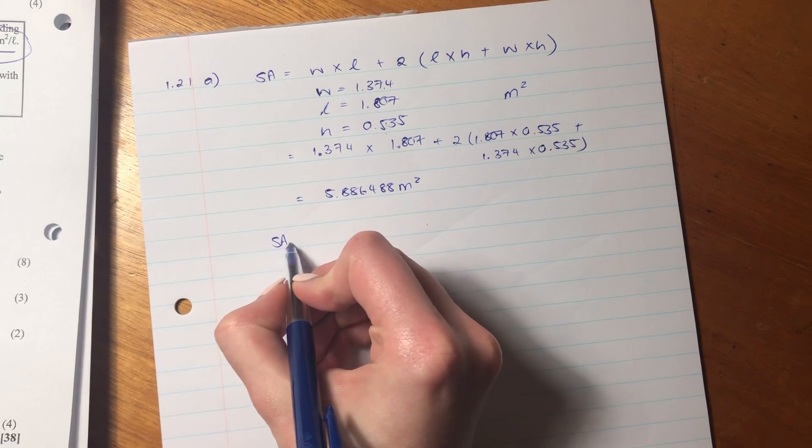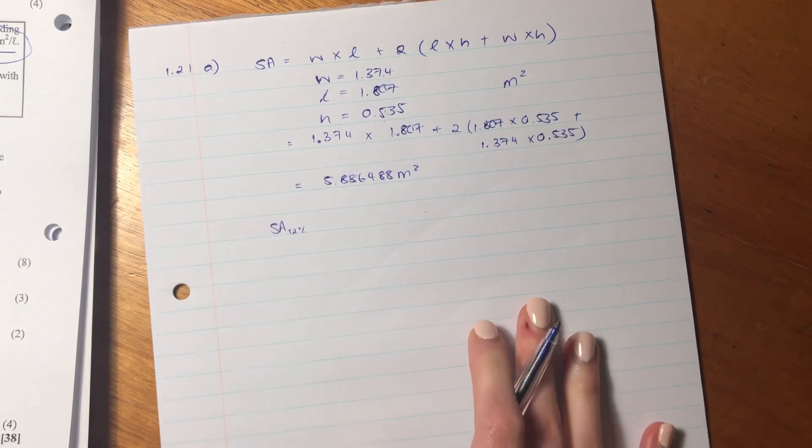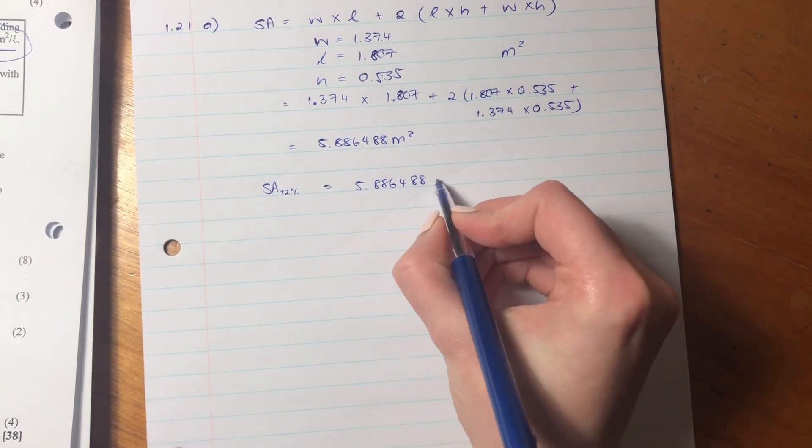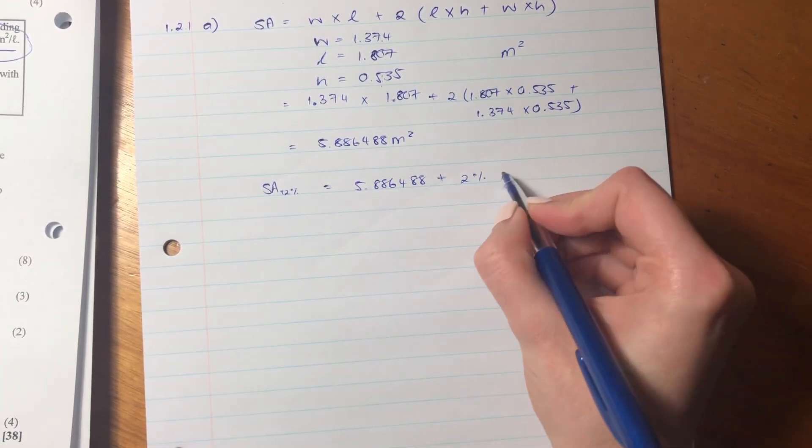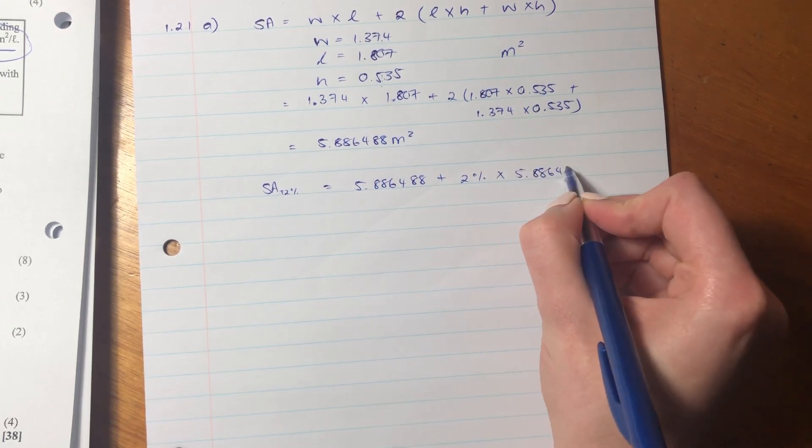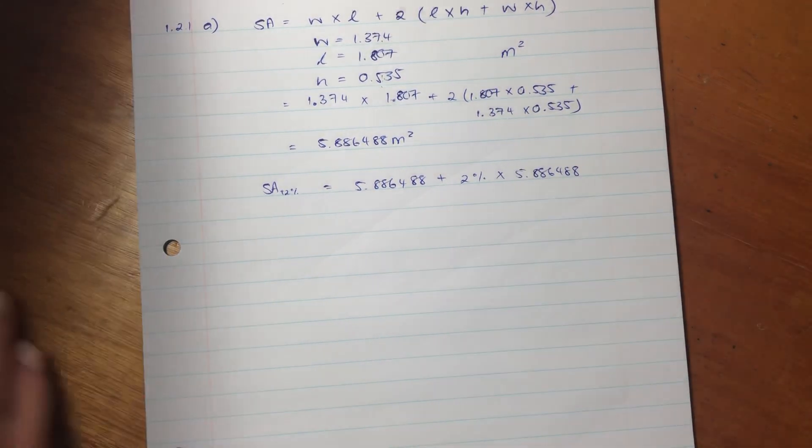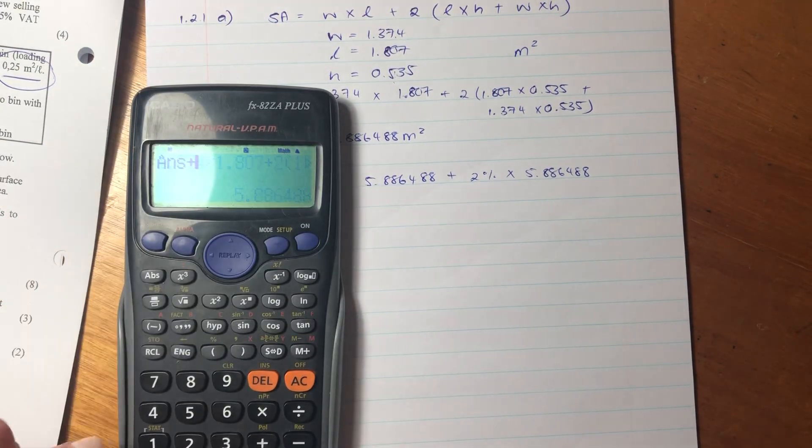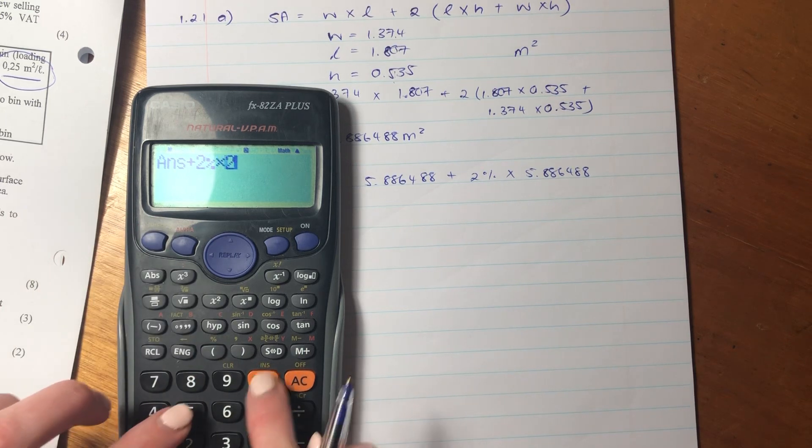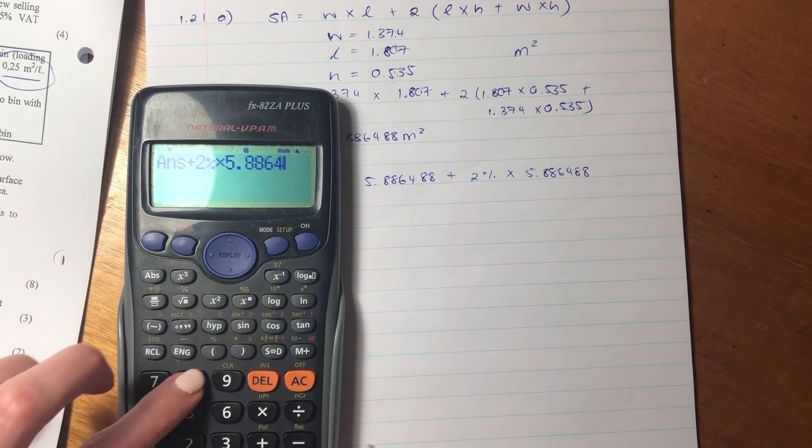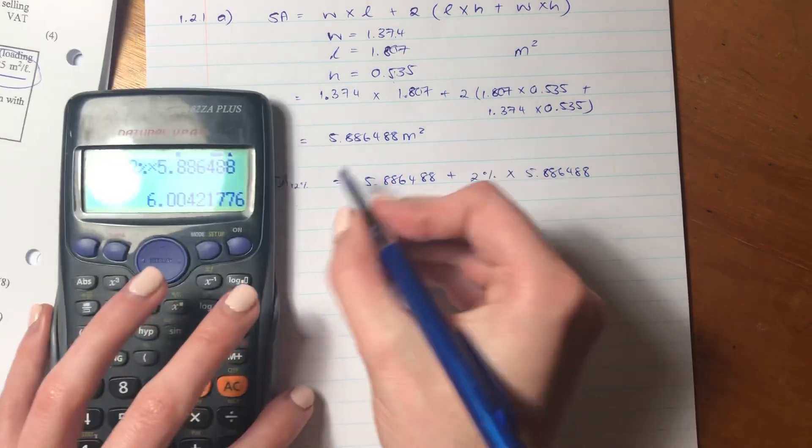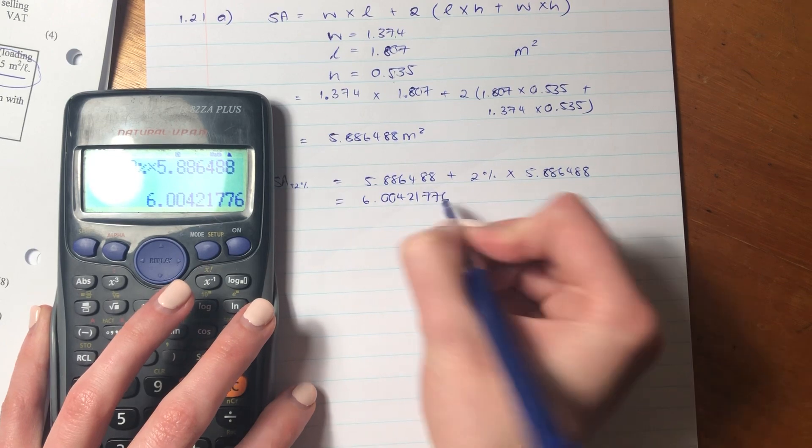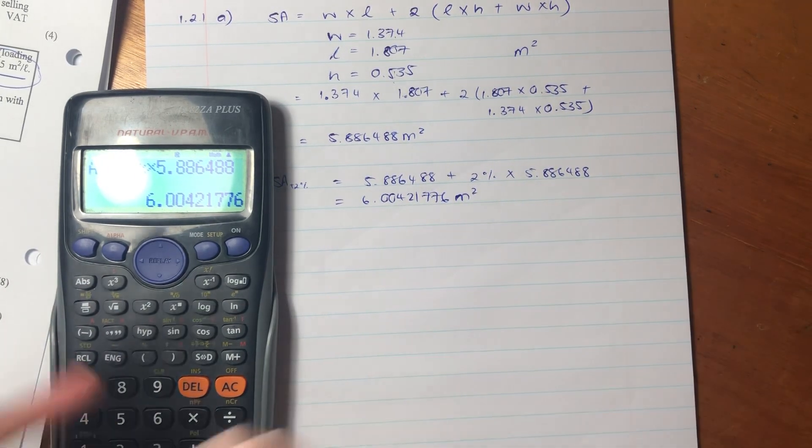We still have to increase it for this 2%, for that additional surface area that I've talked about because of it not being a flat surface. So the surface area plus the 2% is going to be this 5.886488 plus 2% of that amount. Because remember, we have to increase it by 2%. So we're going to say that answer plus 2% times that same answer. And that is our total surface area taking into consideration that additional 2% that we need for the uneven surface.